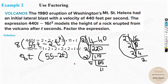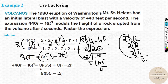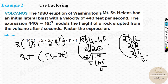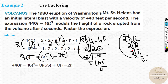Double-checking: 8t(55 - 2t). The GCF 8t is removed from both terms. From 440t ÷ 8t = 55, and from 16t² ÷ 8t = 2t. So the final answer is 8t(55 - 2t). When doing this with variables, you can handle just the numbers separately and the alphabets are straightforward.